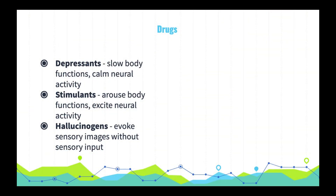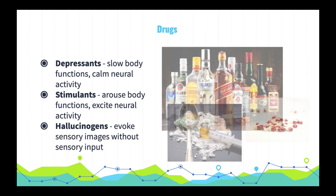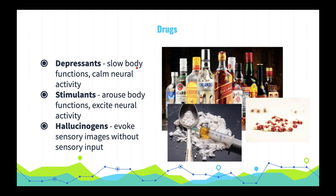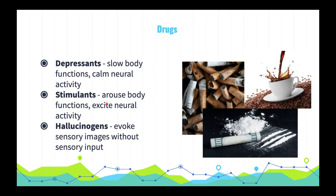I have a few comments to make about drugs. There are three major categories of psychoactive drugs: depressants, stimulants, and hallucinogens — all of which affect the brain synapses by mimicking, stimulating, or inhibiting neurotransmitters. Depressants slow body functions and calm neural activity, and they include alcohol, barbiturates or tranquilizers, and opiates like heroin.